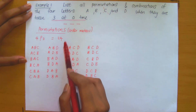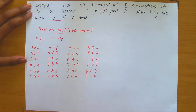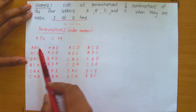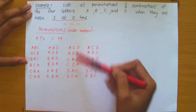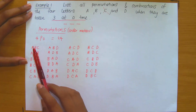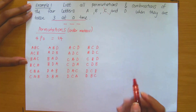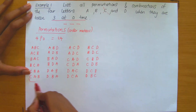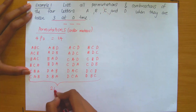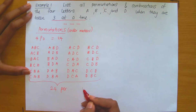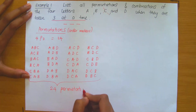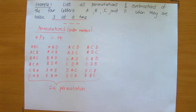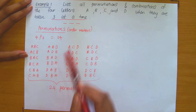Let's verify: have we listed 24 different ways, or are we short? We have four columns, and in each column I've written down six permutations. Six times four is 24, so we do have 24 permutations — the complete set of three-letter arrangements of A, B, C, and D with no repetition allowed and where order matters.